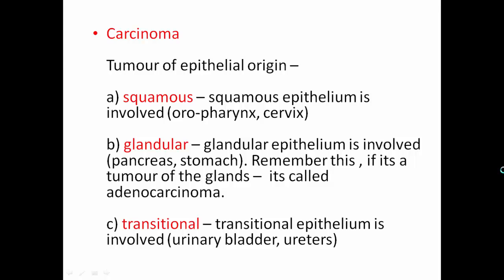Transitional epithelium is found in the urinary bladder and ureters, so any tumor arising from these will be referred to as transitional cell carcinoma. Smoking and alcohol are the top two risk factors. The free radicals and hydrocarbons from smoke are excreted through the kidneys, collecting in the bladder and ureters overnight for eight to ten hours, causing significant carcinogenic damage to the transitional epithelium.